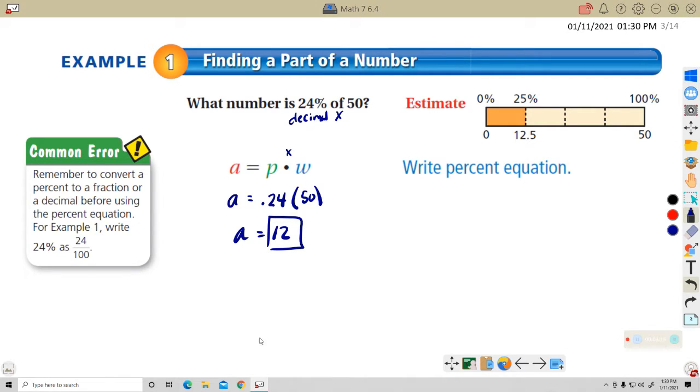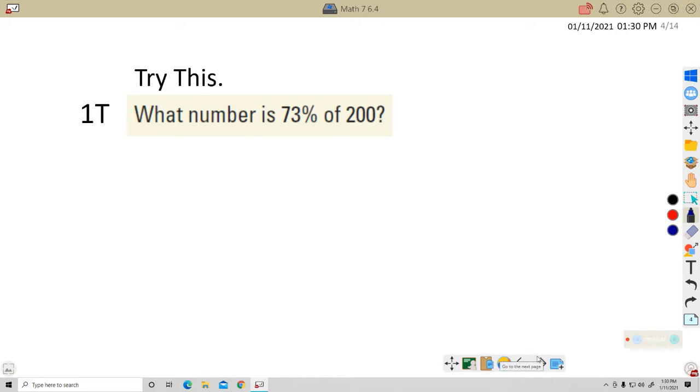This first one, we're finding the part—we're finding A. Pause this and give this one a try. What number is 73% of 200? The 'of' 200 tells us that this is the whole. Pause the video, see if you get an answer for that, and I'll join you on the next screen.